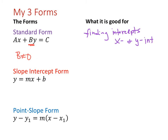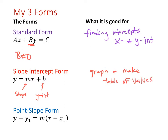Slope-intercept form, which most of us will know, is y equals mx plus b, where m is our slope and b is our y-intercept. It obviously shows us the slope and the intercept, which is why it's named slope-intercept form. The best thing we can use this for is to quickly graph and make a table of values — we can easily graph it using the slope and the y-intercept.